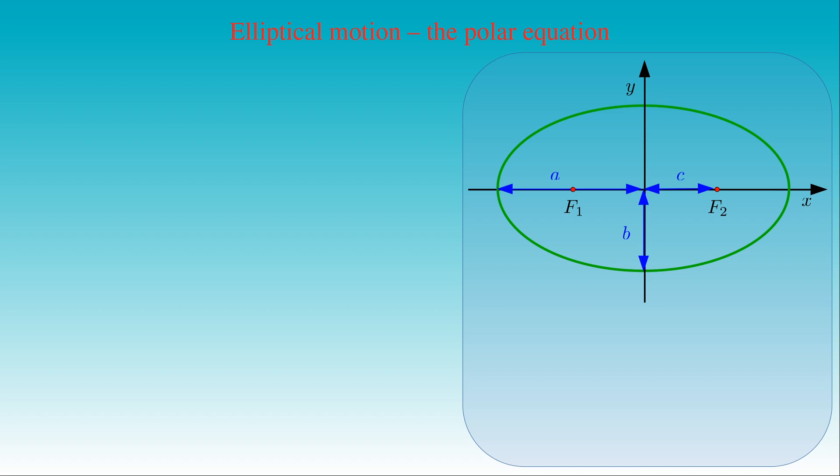The eccentricity E of the ellipse is defined by the square root of 1 minus the ratio of B squared to A squared, and describes the deviation of the shape of an ellipse from the one of a circle. If the eccentricity vanishes, then the length of the semi-major axis is equal to the one of the semi-minor axis.